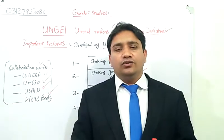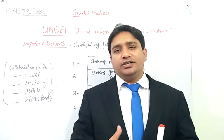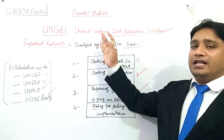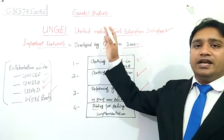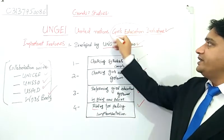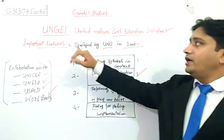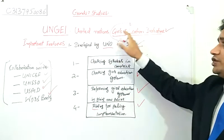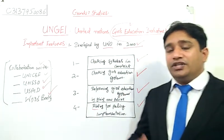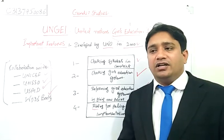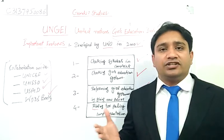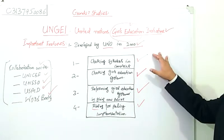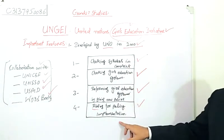UNICEF is an international body and UNGEI is a subsidiary body of UNICEF, working specifically for girls' education. This is the main point — UNGEI's target is girls' education. If we think about the main purpose and method of working of UNGEI, we can understand it through these four parameters and this framework of four areas.